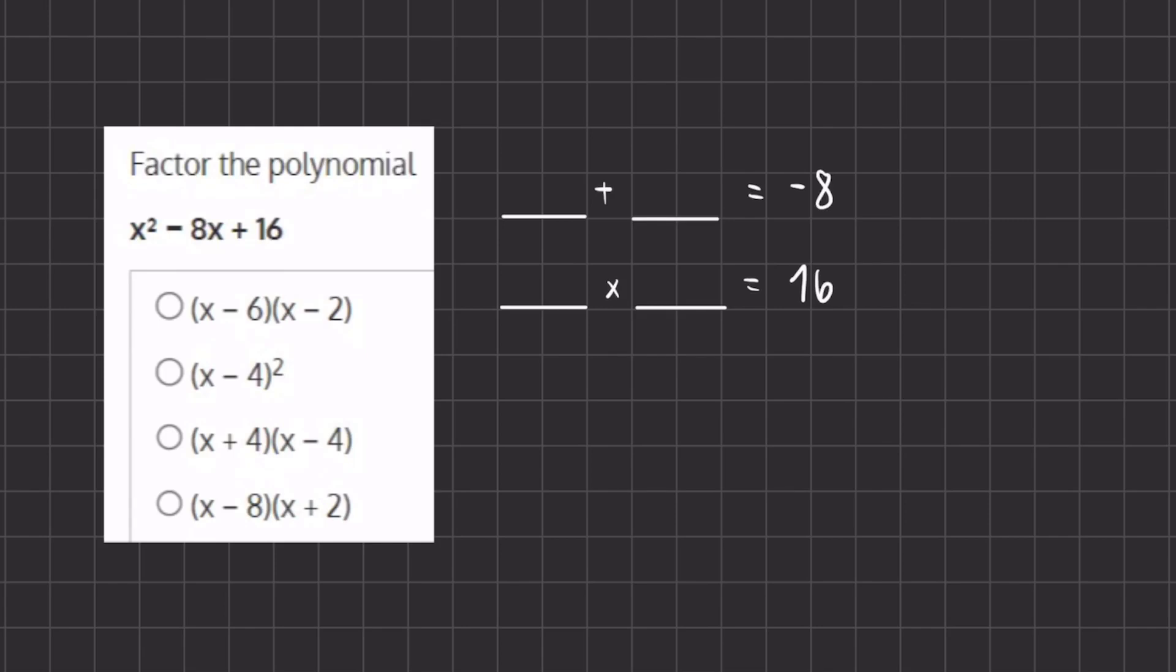Alright, so in this problem we are given a polynomial and we're being asked to factor. We have to find two numbers that add to negative 8 and those same two numbers have to also multiply to positive 16.